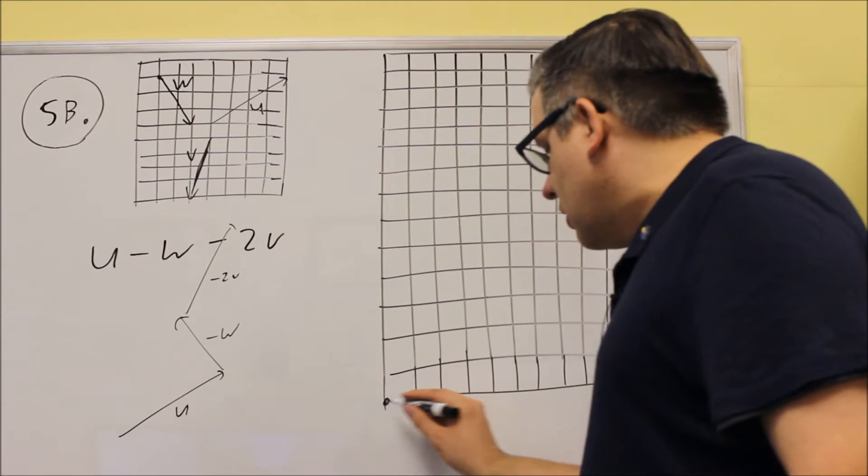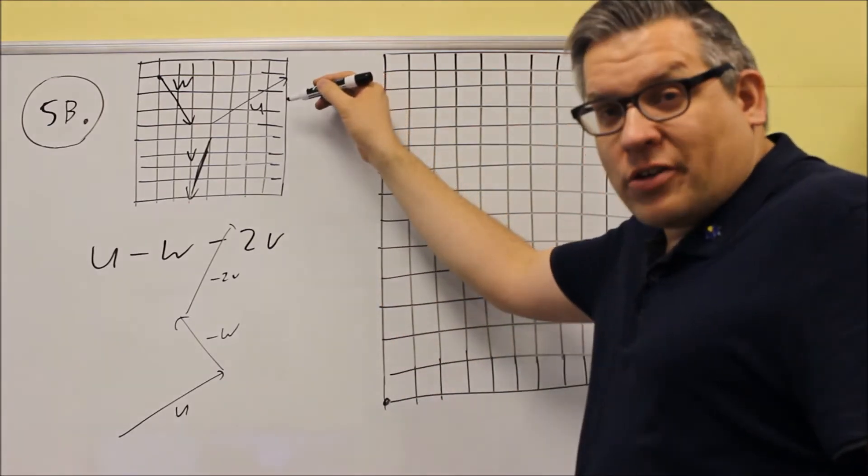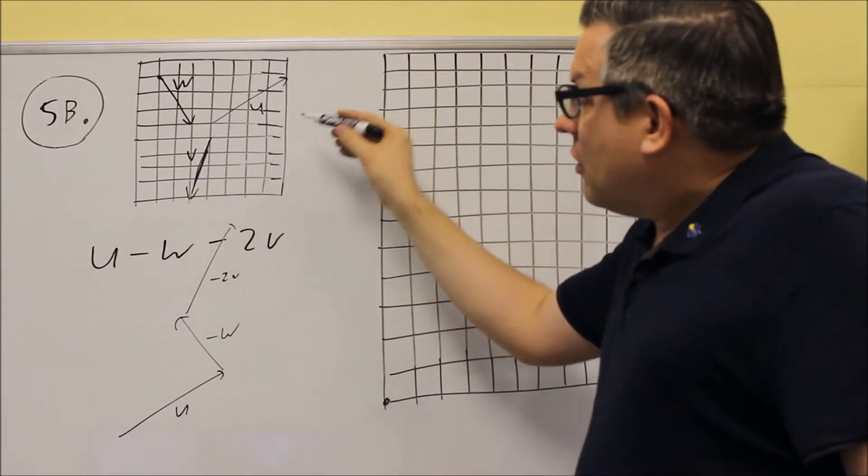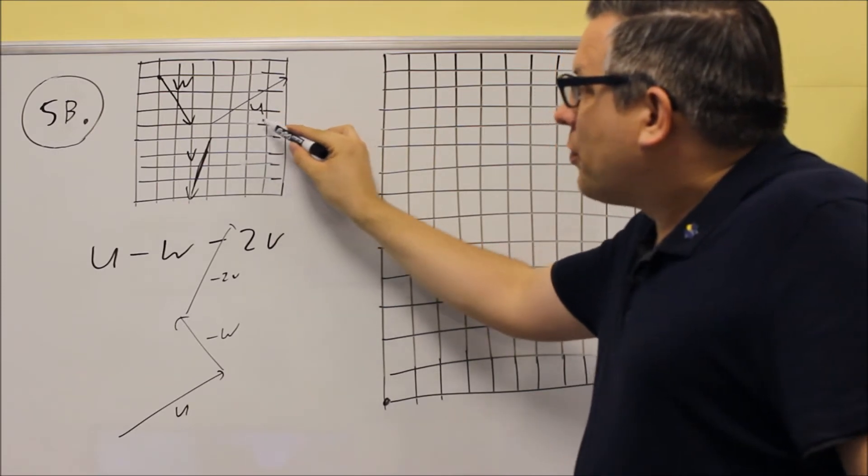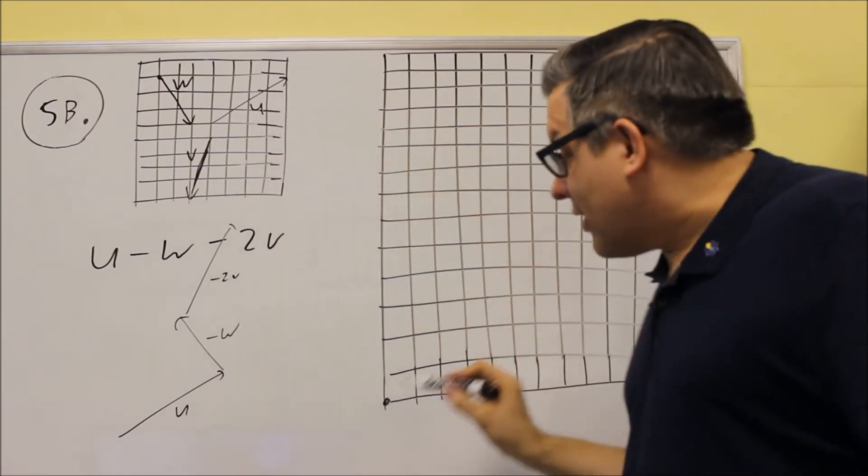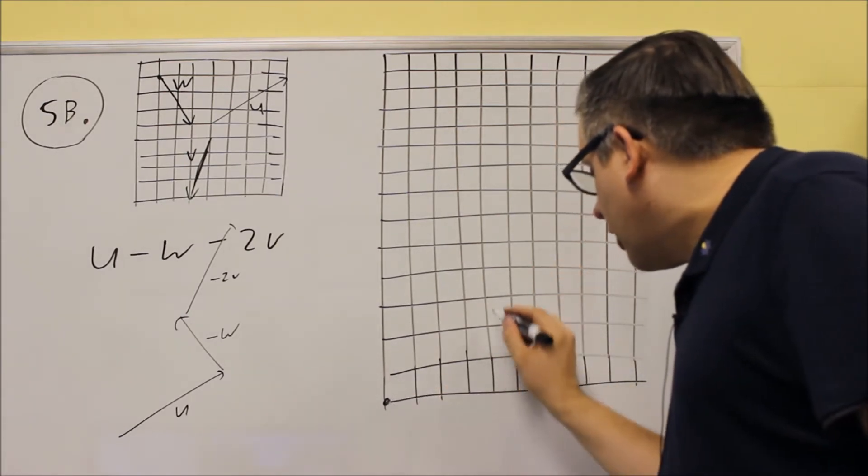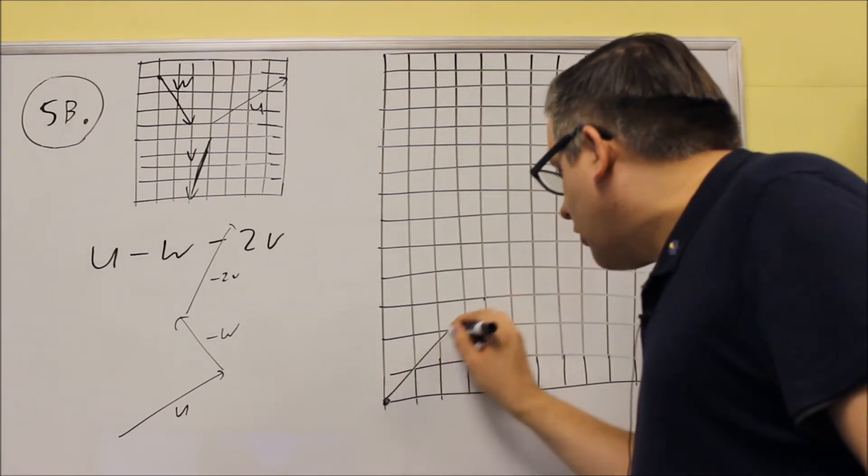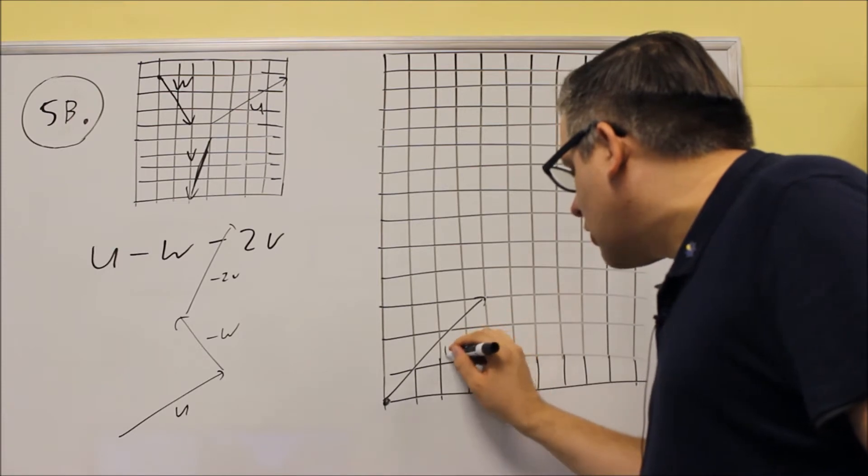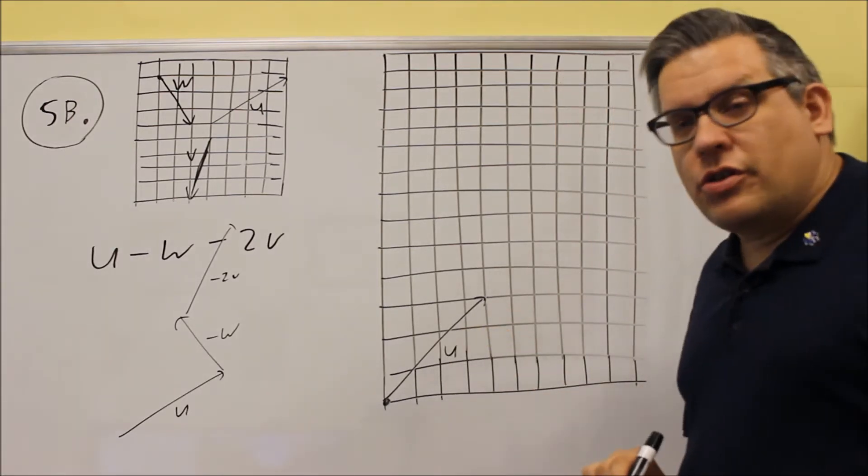So starting there, remember that when you draw these vectors, they have to be precise. You have to specifically count four places to the right and up three. It has to be exactly that way when you put it on the drawing. So go over four and up three. That's going to give you this, so that's the first one. That's the U.